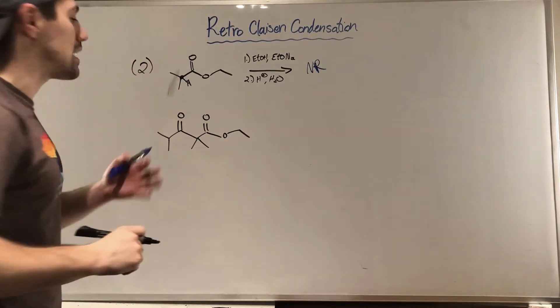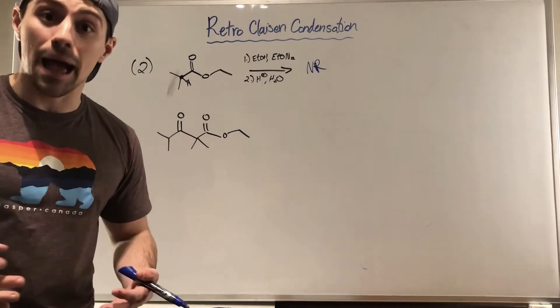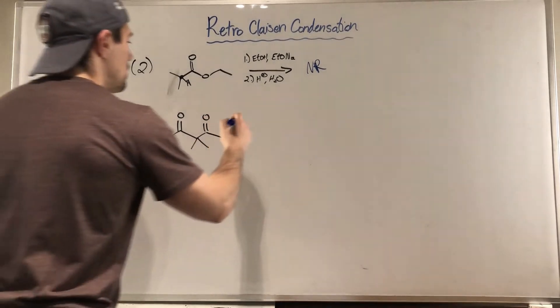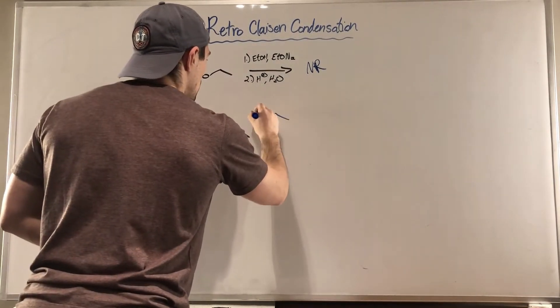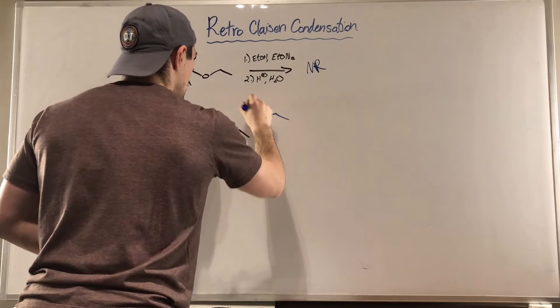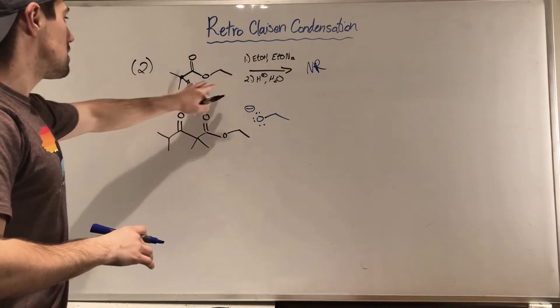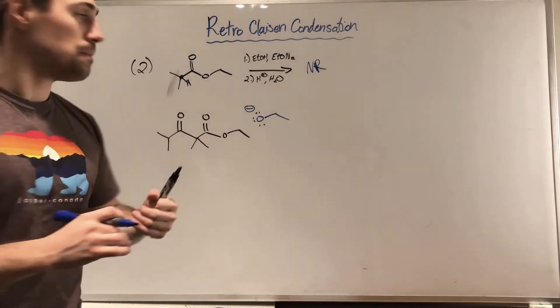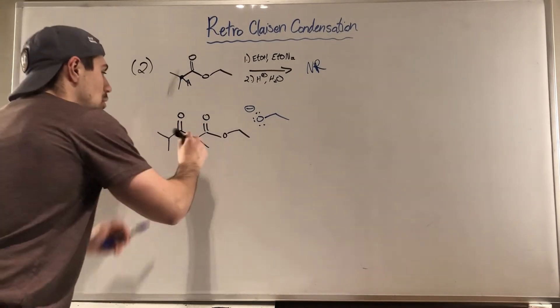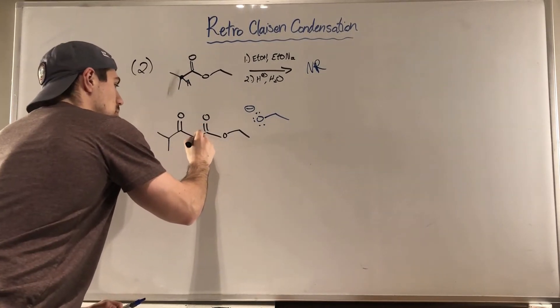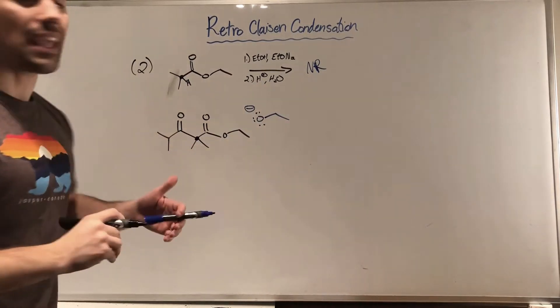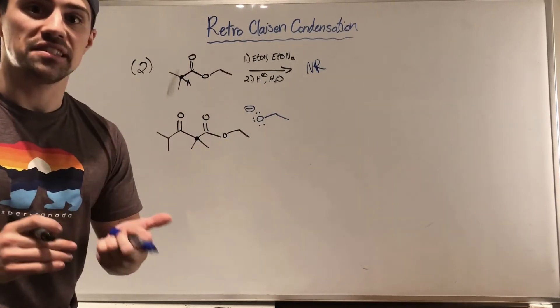This is right after a tetrahedral intermediate has collapsed and we've ejected this part from the second ester that ends up getting attacked. So because there's no proton here available to quench this ethoxide making it ethanol, here's what happens instead.